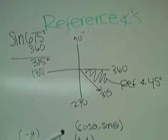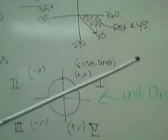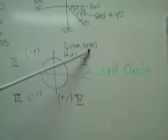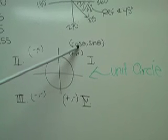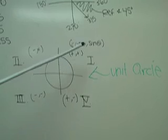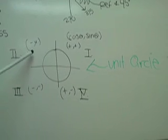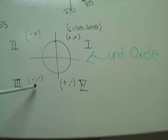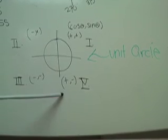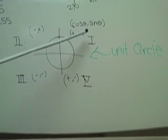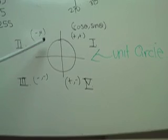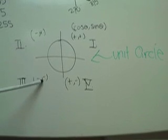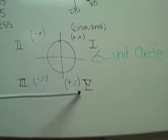Another topic would be the unit circle, which is based on cosine and sine. Cosines will always be on the x-axis. So cosine in quadrant 1 will be positive, cosine in quadrant 2 will be negative, cosine in quadrant 3 will be negative, and cosine in quadrant 4 will be positive. And then the sine in quadrant 1 will be positive, the sine in quadrant 2 will be positive, quadrant 3 will be negative, and the sine in quadrant 4 will be negative.